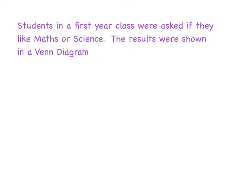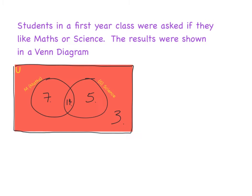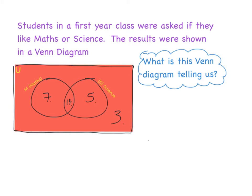Our Venn diagram has two circles and our universe. If we have a look at this information here, this is our universe, and one of the circles is called M — that stands for maths — and the other circle is called S — that stands for science. What I want to ask is: what is this Venn diagram telling us?